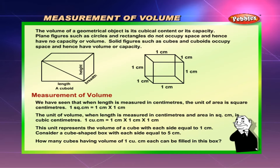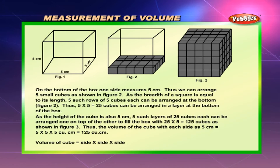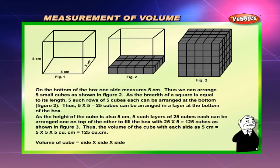Consider a cube-shaped box with each side equal to five centimetres. How many cubes having a volume of one cubic centimetre each can be filled in this box? On the bottom of the box, one side measures five centimetres. We can arrange five small cubes as shown in figure 2. Since the breadth of a square equals its length, five such rows can be arranged at the bottom — five into five equals twenty-five cubes in one layer.